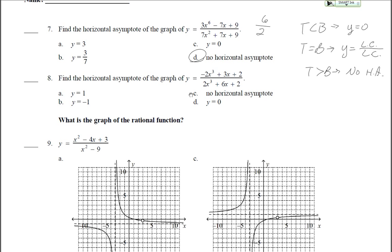Number 8 uses the same chart. The degree of the numerator is 3 and the denominator is 3 — they're equal. So the horizontal asymptote is y equals the leading coefficient of the top over the leading coefficient of the bottom: negative 2 over 2 reduces to negative 1. The answer for number 8 is letter B.